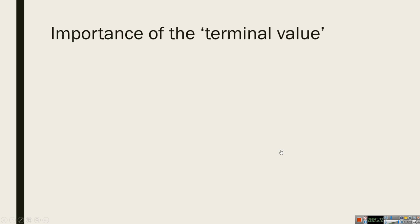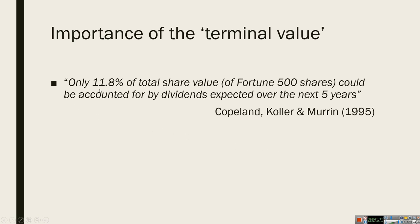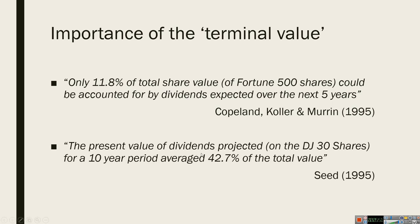The terminal value can constitute a very large portion of the value of a company. Some relatively old research shows that only about 12% of the total share value of Fortune 500 shares could be accounted for by dividends expected over the next five years. We're talking about free cash flows rather than dividends, but it will be a similar proportion. For the Dow Jones 30 shares over a 10-year period, the first 10 years of dividends still only constitute about 43% of the value. So it's not unusual for the terminal value to be more than 50% of value — even after the first 10 years of operations. It's quite important.